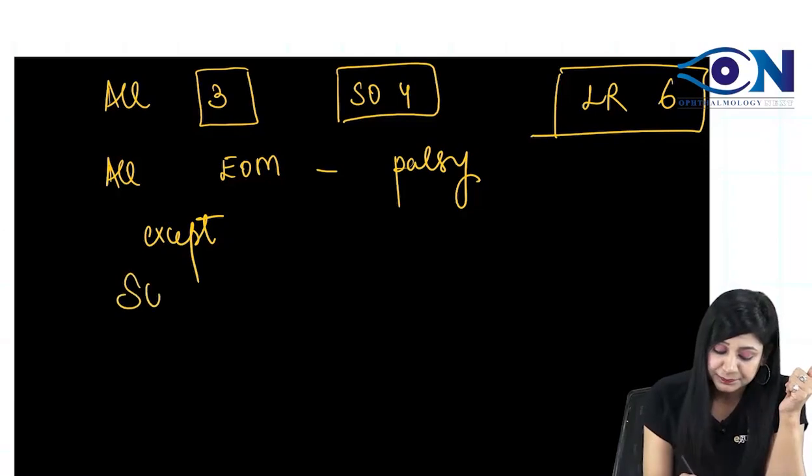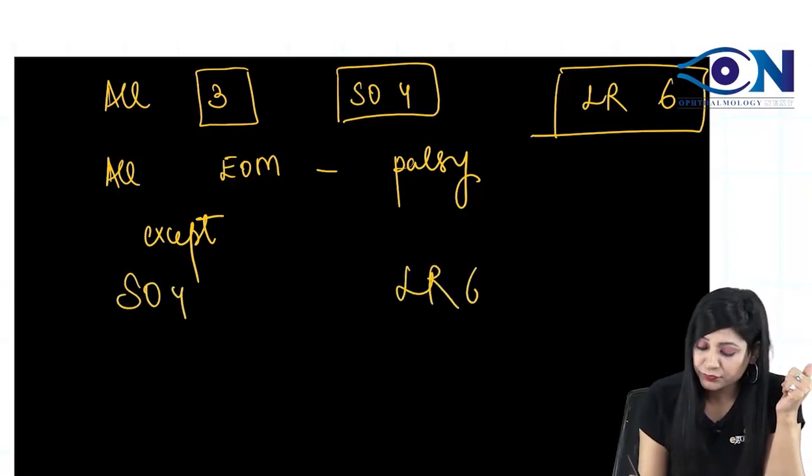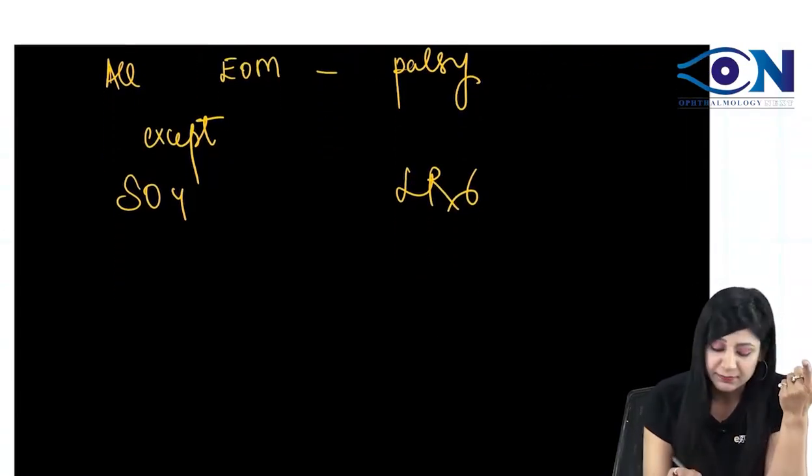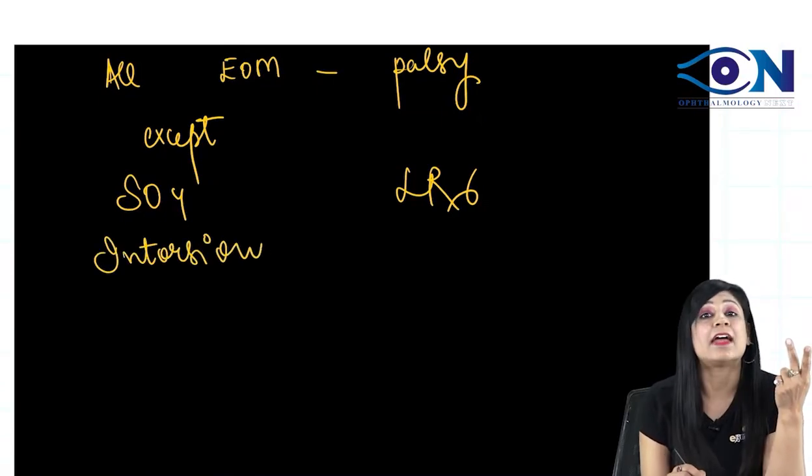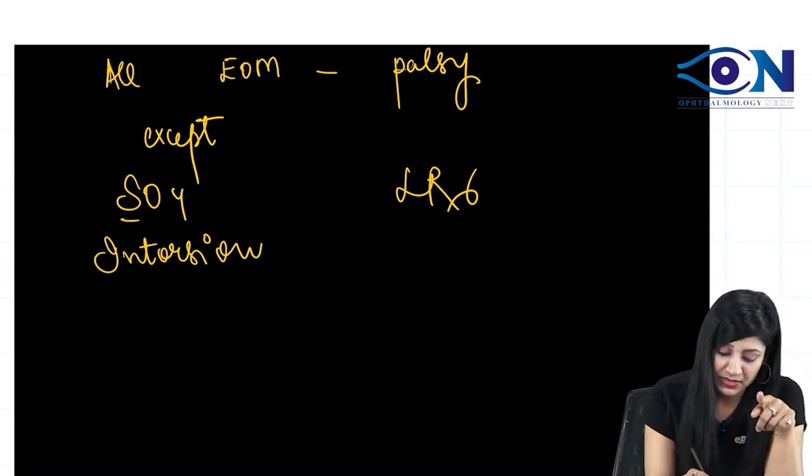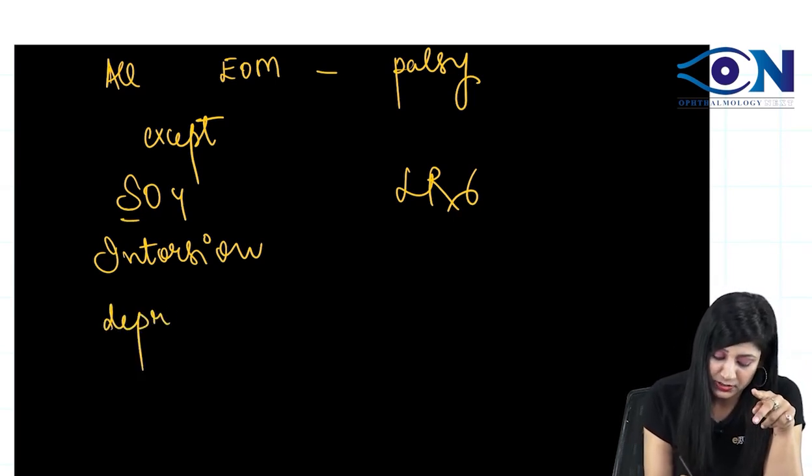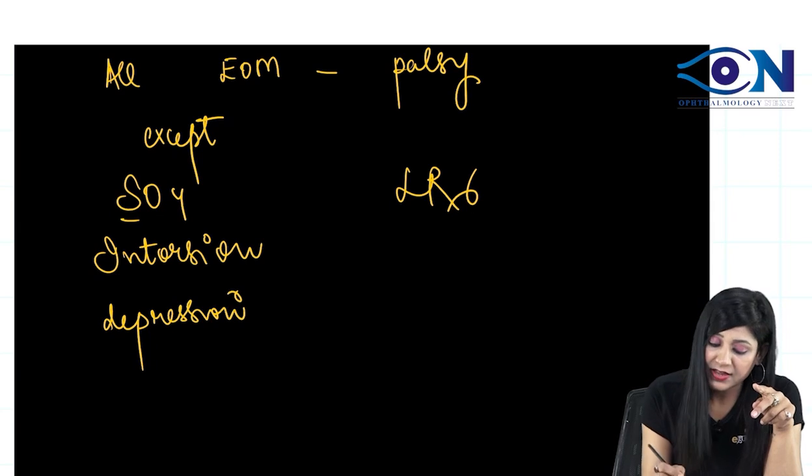Now, what are the actions of this SO4? It is an oblique muscle, so the main action will be intorsion. O4 oblique and O4 opposite. Superior will go into depression and we have the RAD.